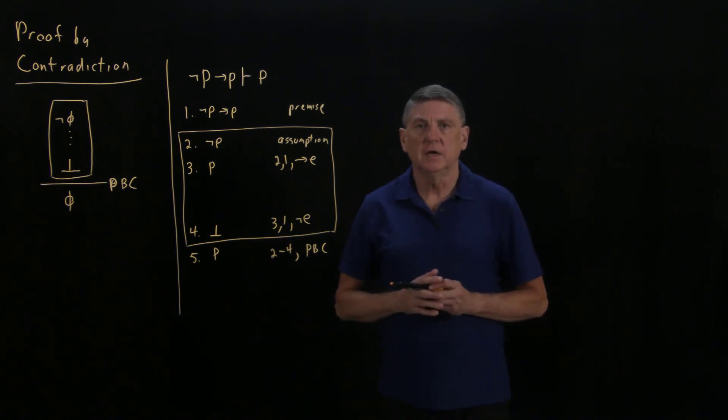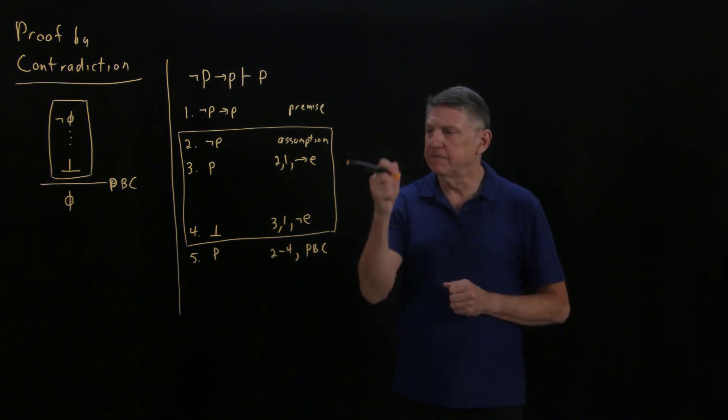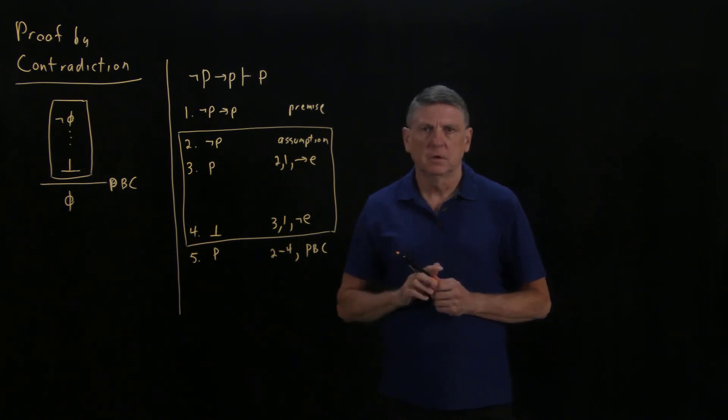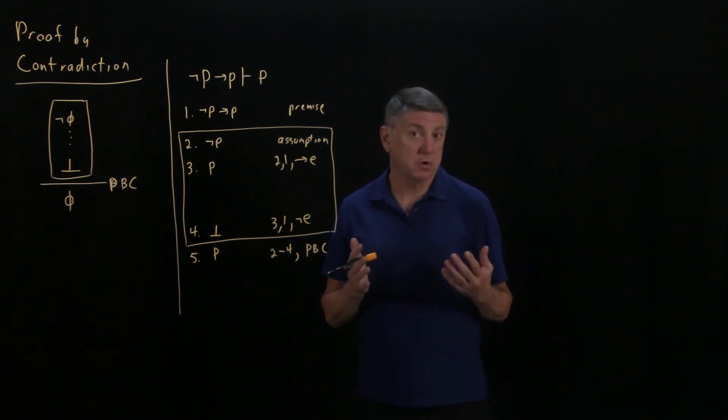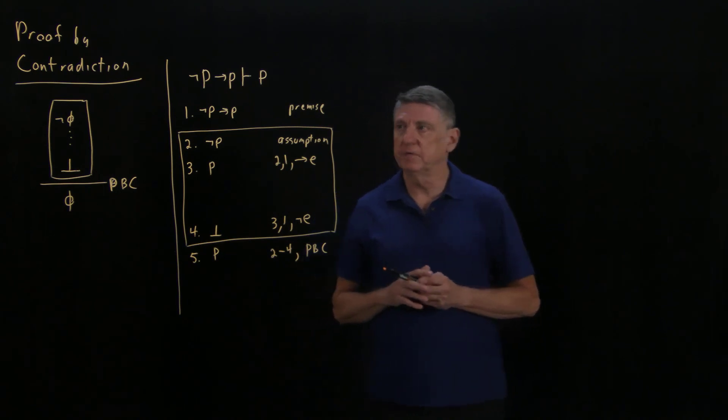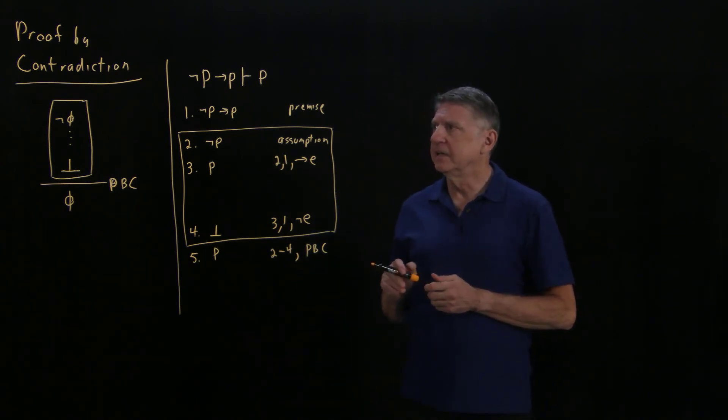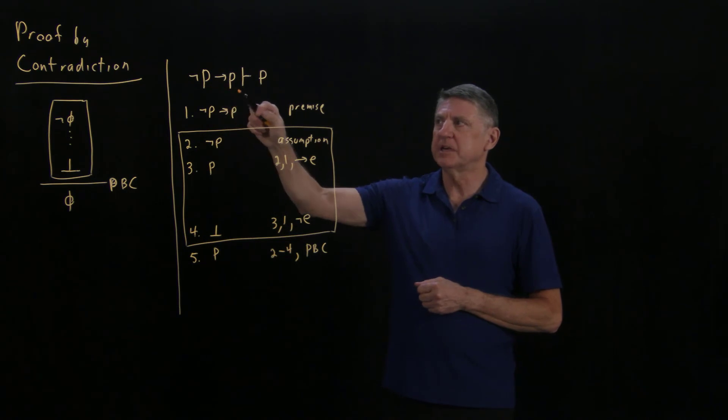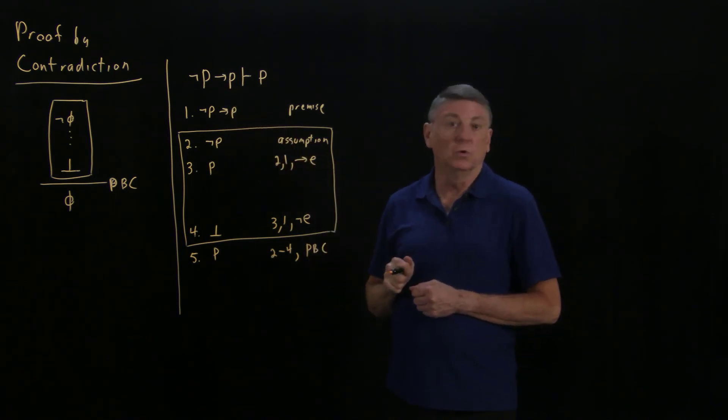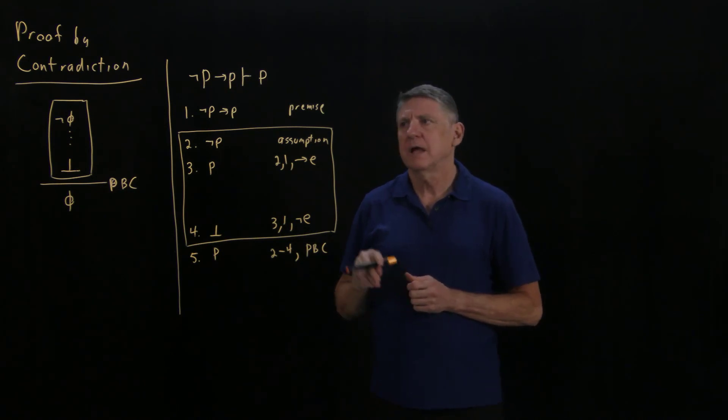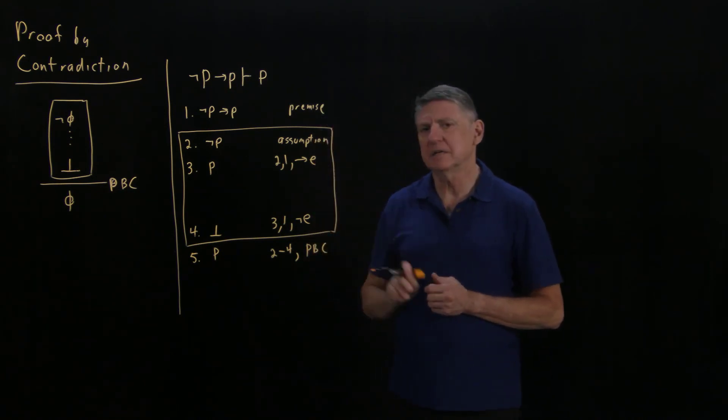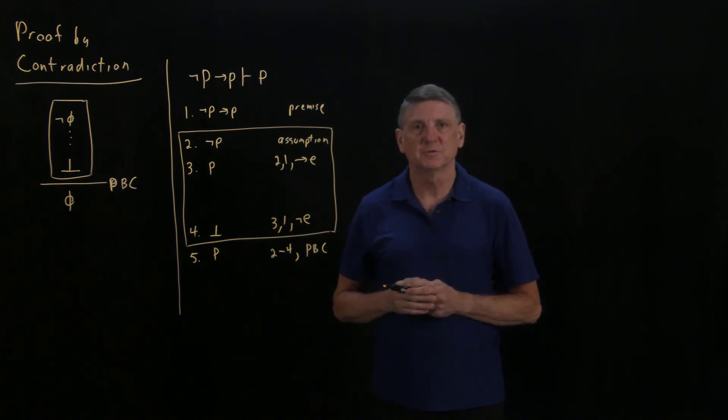So what we've done is we've used proof by contradiction in a five-line proof, and what we've proved is something that might strike us as odd if we were just talking, for example, with some non-computing friends. If we said the falsity of a proposition implies the proposition, so the proposition must be true, they might look at us a little bit oddly. This is a slightly odd argument. However, it does follow from the rules of natural deduction.